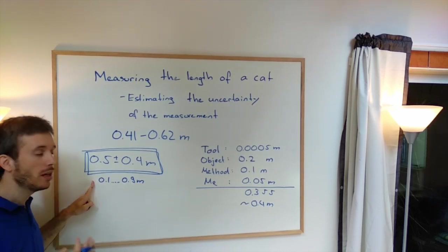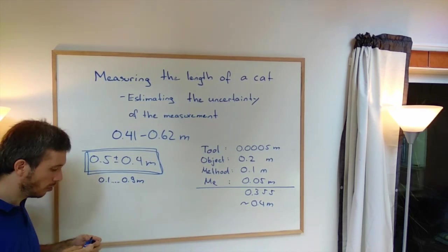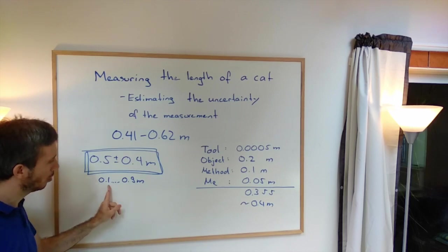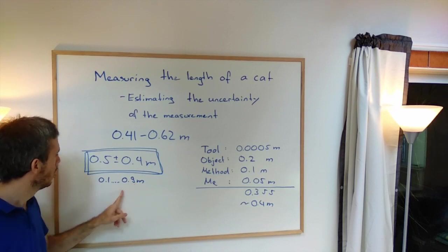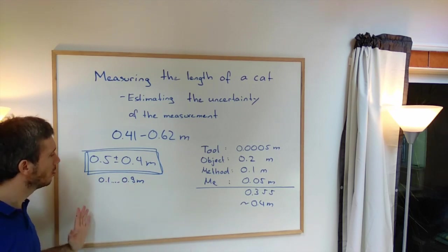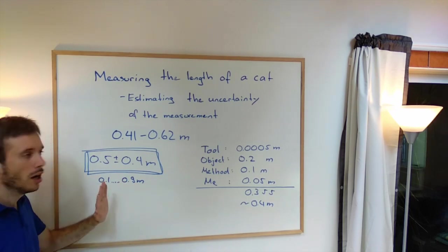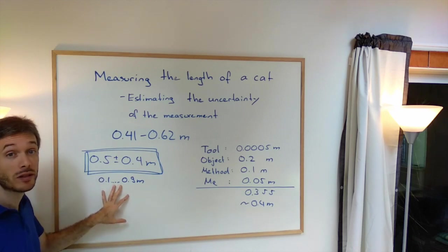However, accuracy. Accuracy meaning, am I absolutely sure that the real value is in there? Yeah, I'm absolutely sure. My cat is definitely longer than 10 centimeters. It's definitely shorter than 90 centimeters. Actually, probably most cats in this world will fit into this. So accuracy of this measurement was good. Precision was low.